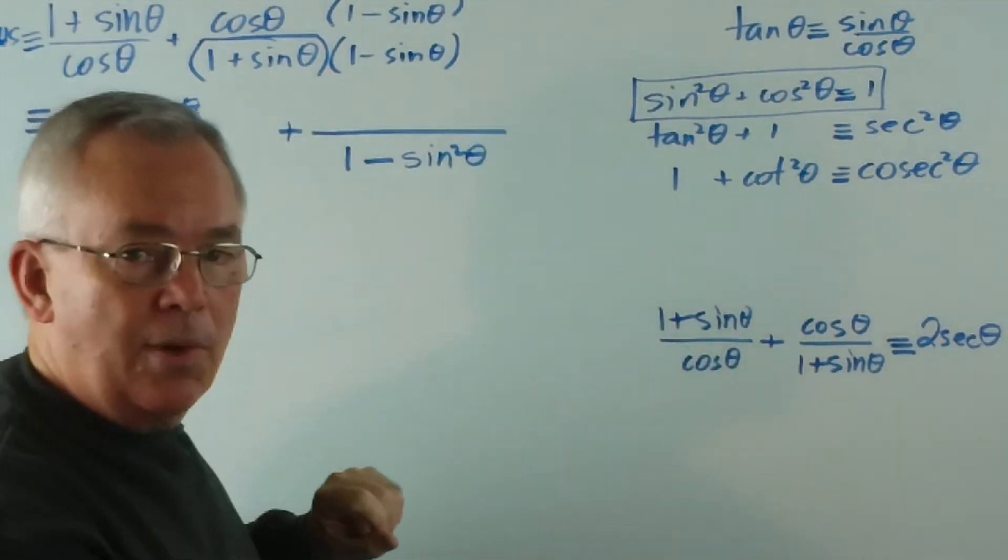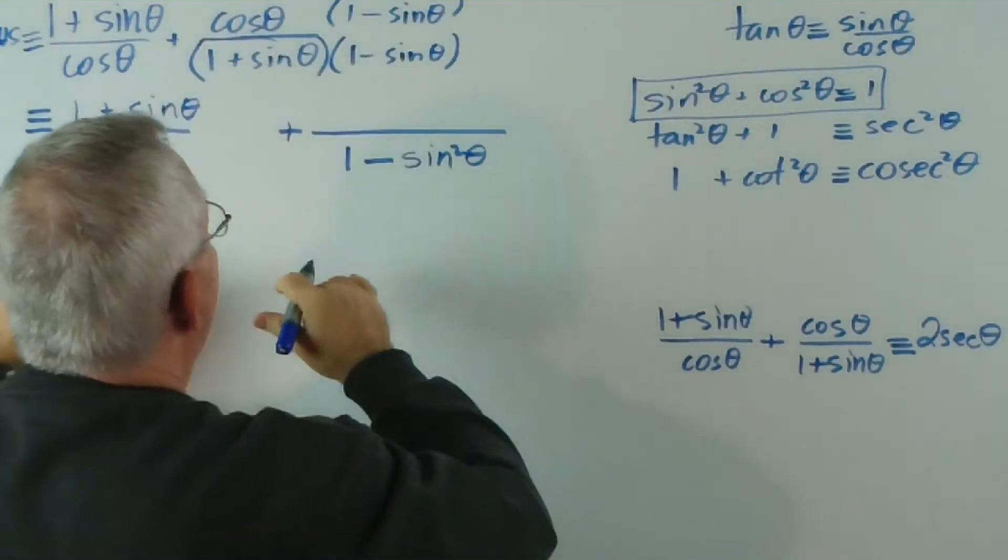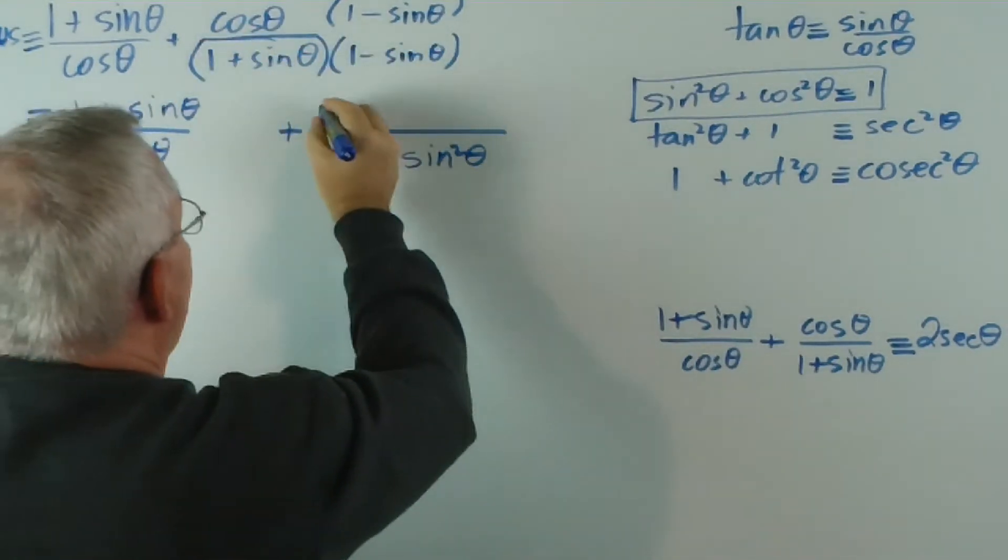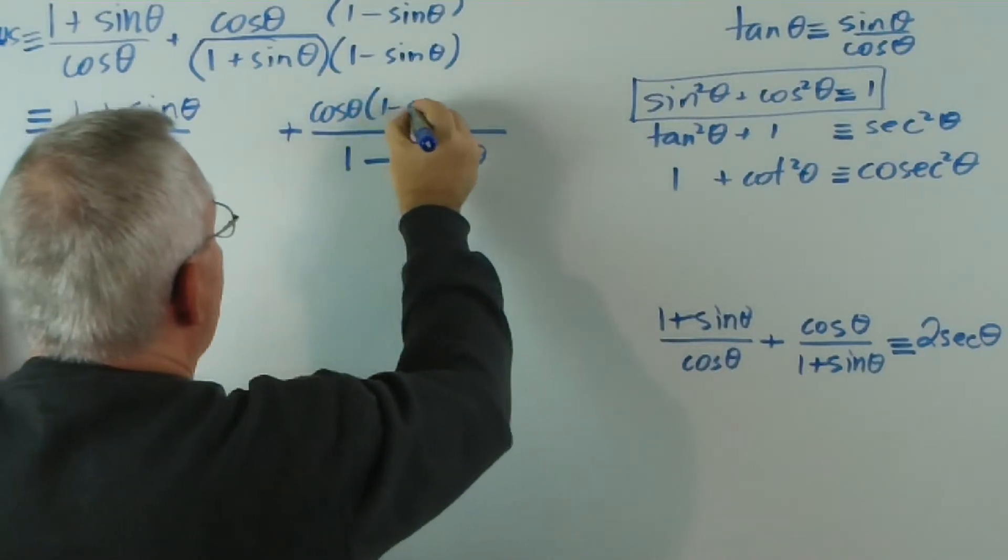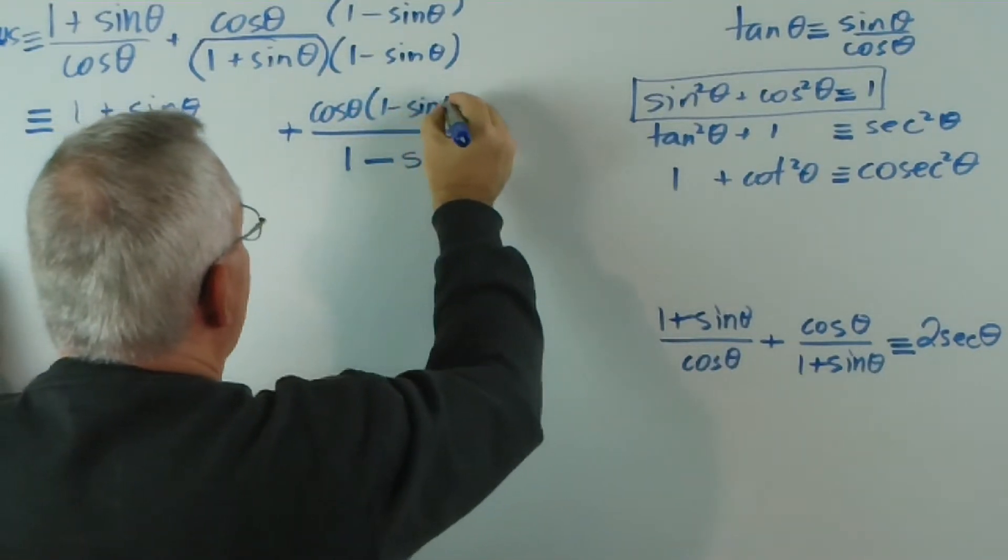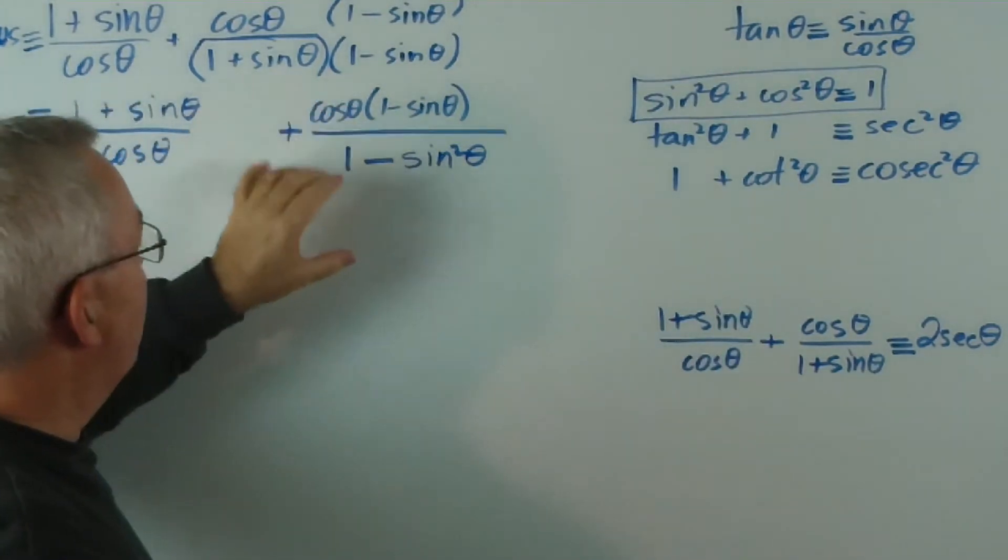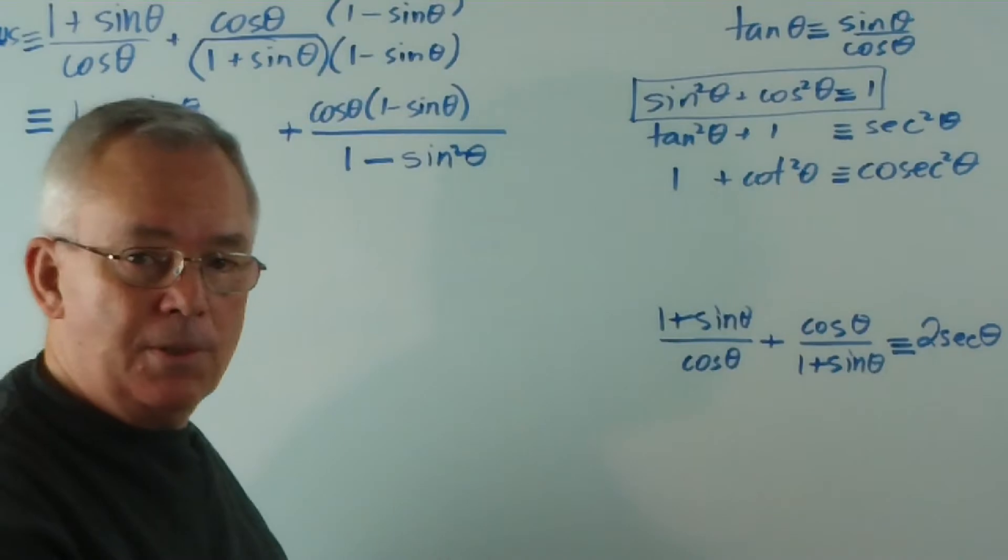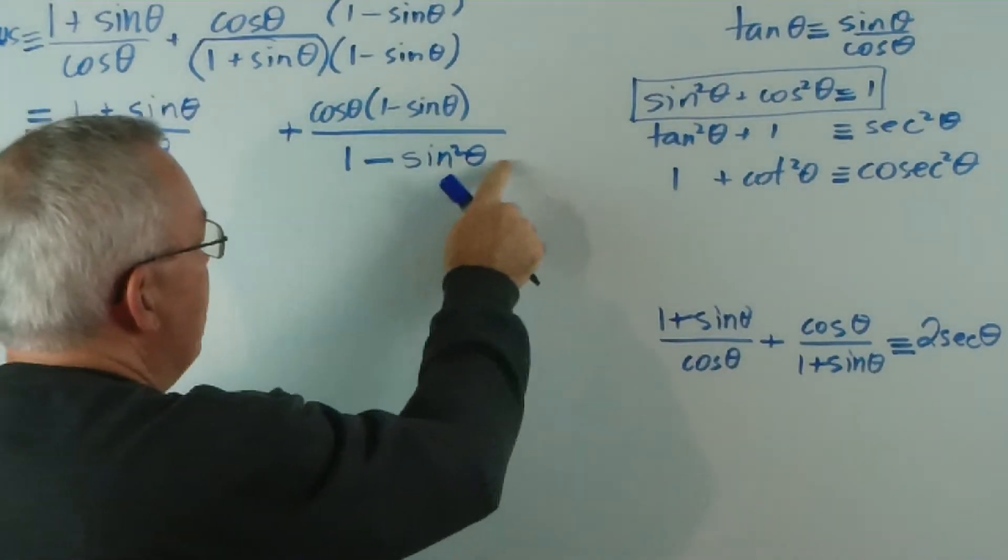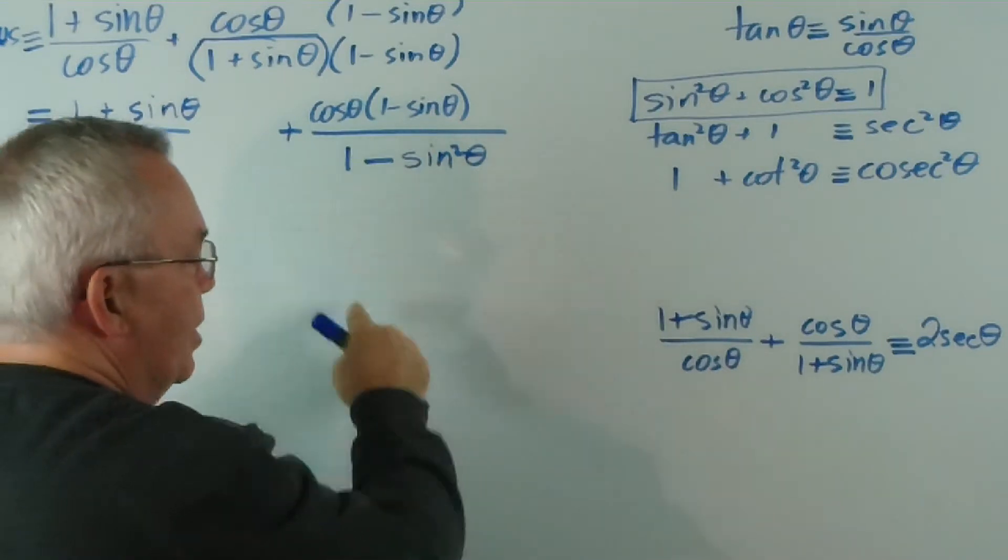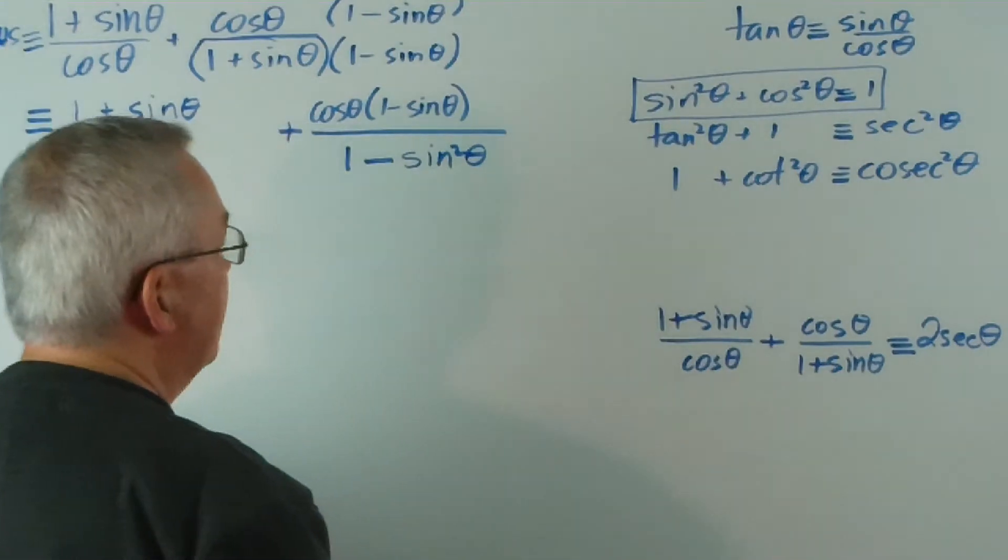Now you might not think that's a great improvement at the moment. We'll talk about that in a moment. What do we have on the top? Well, we have cos theta times 1 minus sine theta. That's often the case. When we try to improve the denominator, the numerator gets worse. But we'll see what happens. This is what I'm particularly interested in at the moment, because it was actually one of the worst parts of my problem, a particularly ugly denominator.